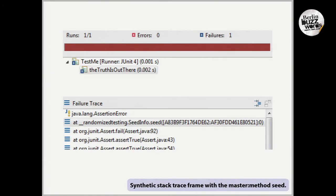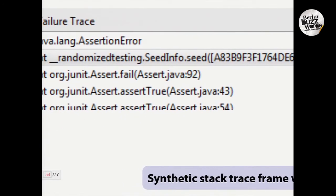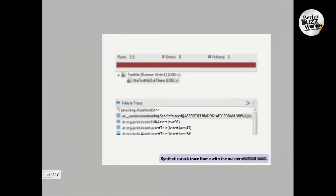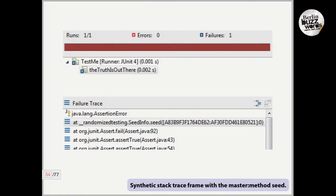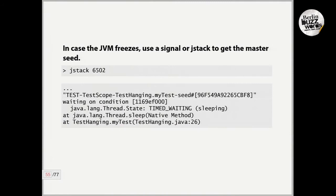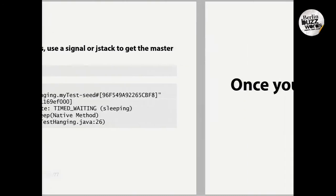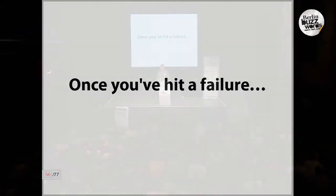Now comes an important part of the framework. Because if a test fails, you need to know what the master seed was — otherwise you won't be able to repeat the same sequence of operations. Any exception thrown from a unit test with the randomized runner will have a synthetic stack trace entry that contains the seed. All you need to know is this seed, and then repeat the test and it should predictably run in the same way. If your test never ends — it hung somewhere, it froze somewhere — you can still get the seed by dumping all the stack traces, and one of the threads will have the seed in its name.